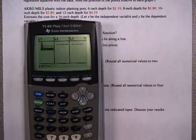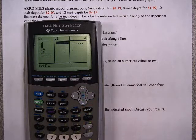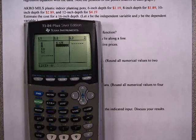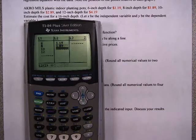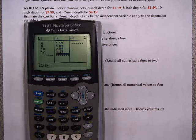6, 8, 10, hitting Enter after each one, and 12. My prices: $1.19, hit Enter, $1.89, hit Enter, $2.89, hit Enter, and $4.19. So the first step in doing a regression equation is to enter your data.